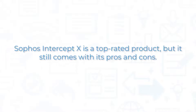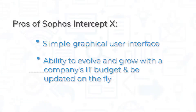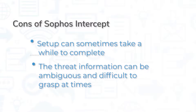Sophos Intercept X is a top-rated product, but it still comes with its pros and cons. The simplicity of the graphical user interface is something that most companies appreciate. One of the most helpful parts of Intercept X is its ability to evolve and grow with a company's IT budget and be updated on the fly. A problem that some have with the software is that the setup can sometimes take a while to complete. Some users also say that the threat information can be ambiguous and difficult to grasp at times.